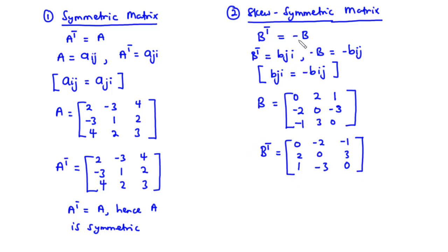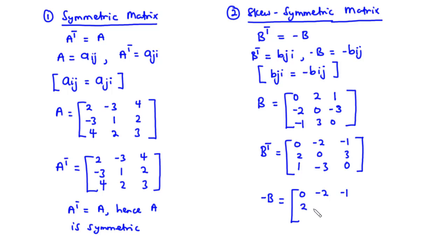Now let's find the negative of matrix B by multiplying each element of matrix B by negative 1. So we get: 0, negative 2, negative 1 for row 1; 2, 0, 3 for row 2; and 1, negative 3, 0 for row 3.